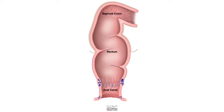One important structure that we should keep in mind is the peritoneal reflection, which covers the upper half of the rectum. The lower half of the rectum is below the peritoneal reflection.